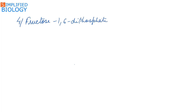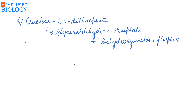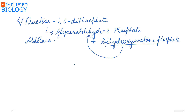Fructose 1,6-diphosphate then undergoes lysis to form glyceraldehyde 3-phosphate and its isomer dihydroxyacetone phosphate. The enzyme used is aldolase. Since these two are isomers, dihydroxyacetone phosphate gets converted into glyceraldehyde 3-phosphate, resulting in two molecules of glyceraldehyde 3-phosphate.